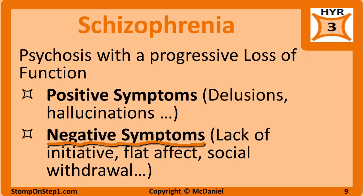Negative symptoms are the absence of normal behavior. Examples include a lack of initiative, diminished speech, disheveled appearance, and flat affect. There used to be specific subtypes of schizophrenia based on what types of psychosis were predominant, but the difference between those types was low yield and, in the most recent version of the DSM, those subtypes have been removed.